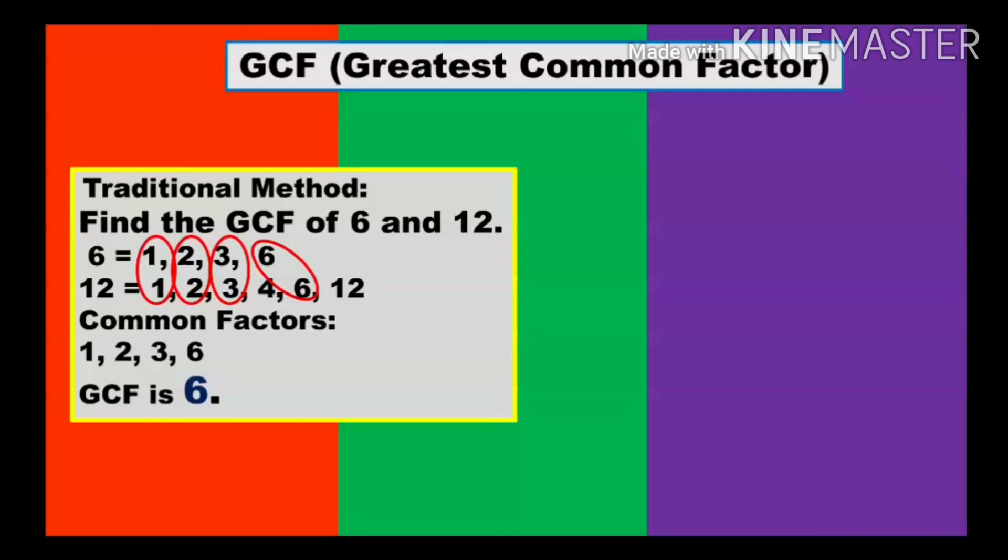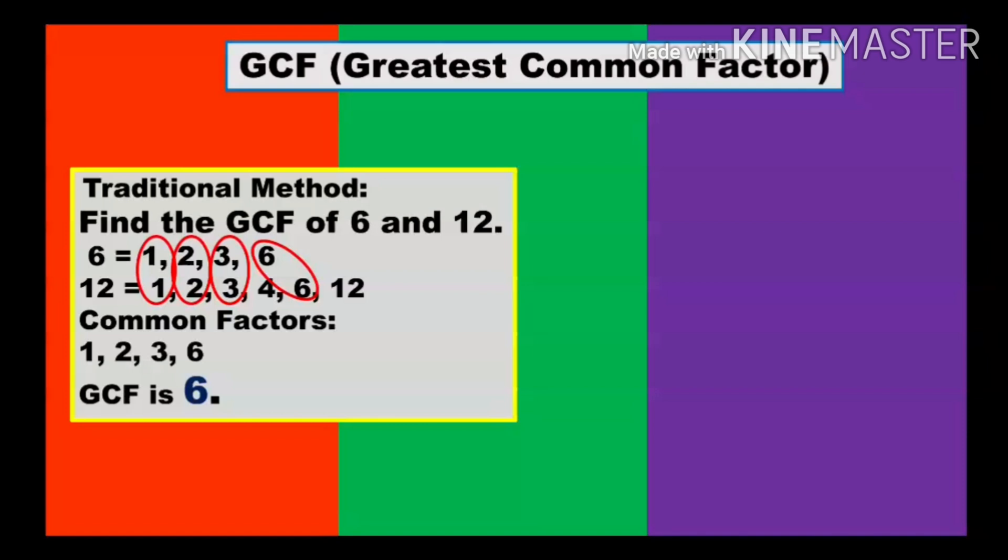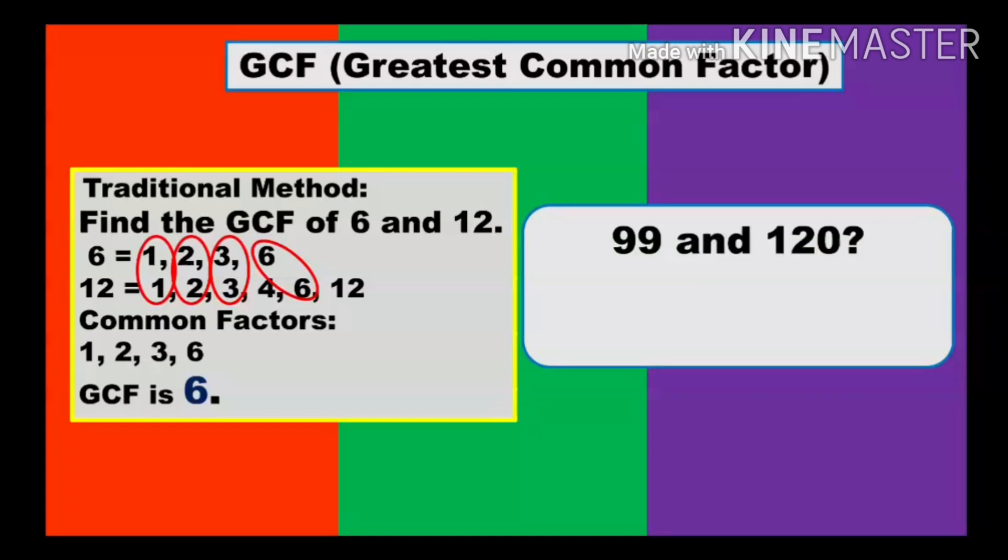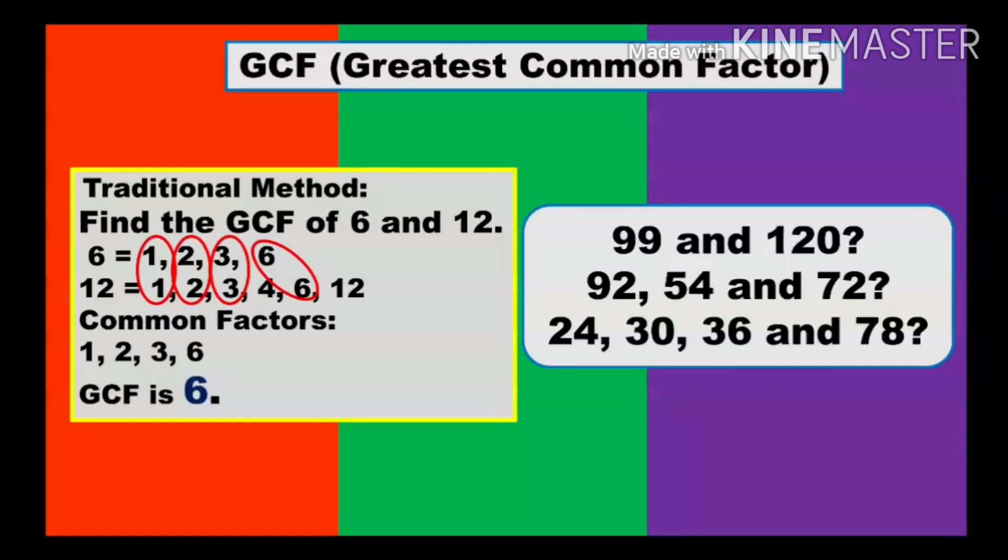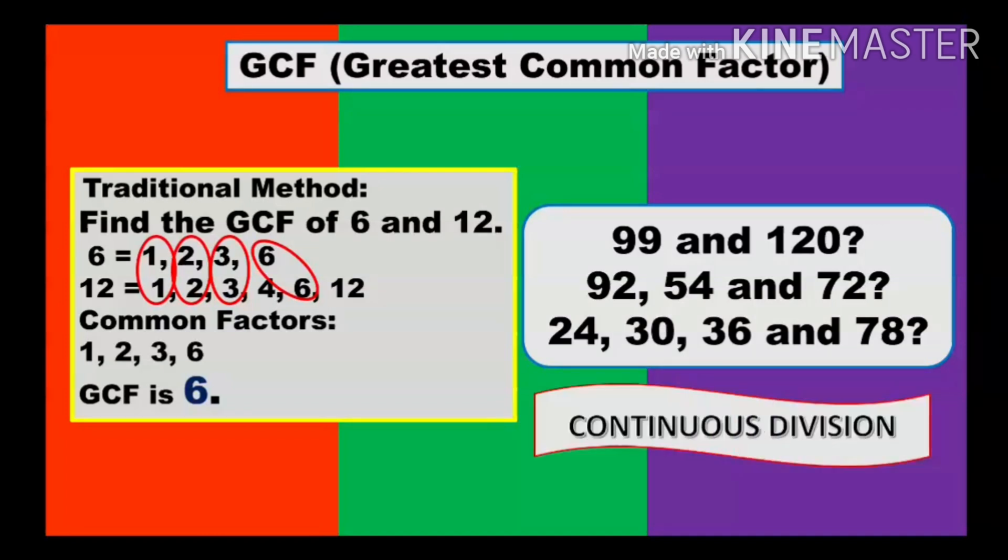Now, what if the given numbers are 99 and 120, 92, 54 and 72, 24, 30, 36, and 70? Do you think we can use the traditional method in getting those numbers? Yes, you can, but you'll take a very long time. So therefore, now I'll be introducing to you another method in finding the GCF. And this method is called continuous division.